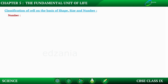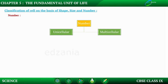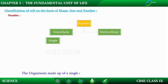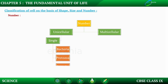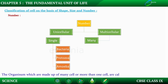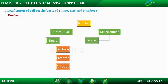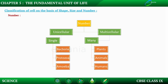On the basis of number, there are two types of organisms: unicellular and multicellular. 'Uni' means single, so a unicellular organism is made up of a single cell. Examples include bacteria, protozoa, and amoeba. 'Multi' means many, so multicellular organisms are made up of more than one cell. Examples of multicellular organisms include plants, animals, and humans.